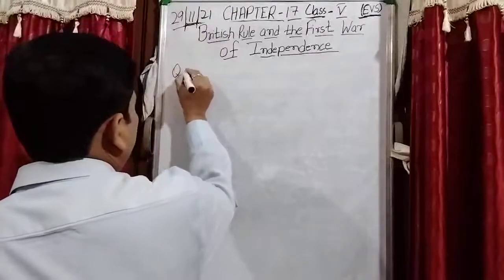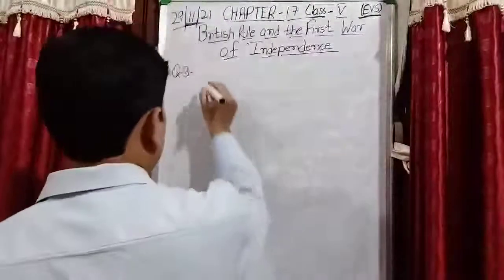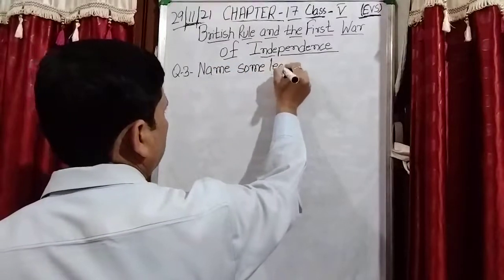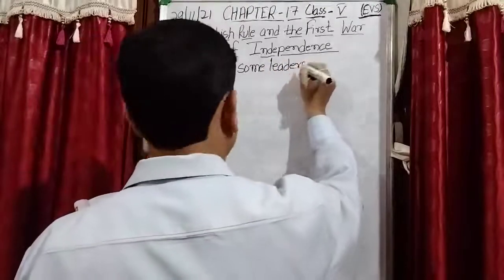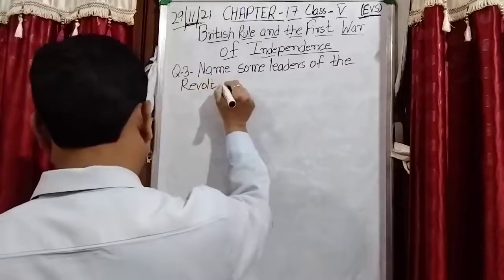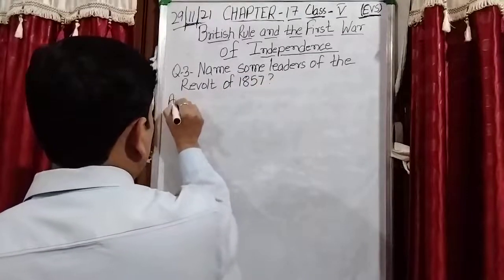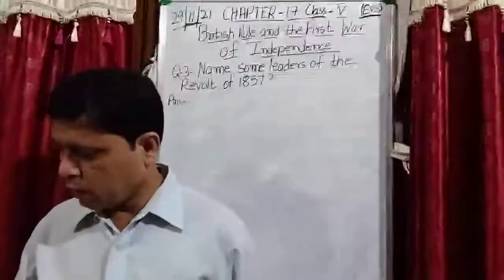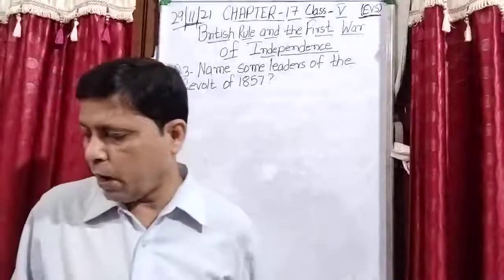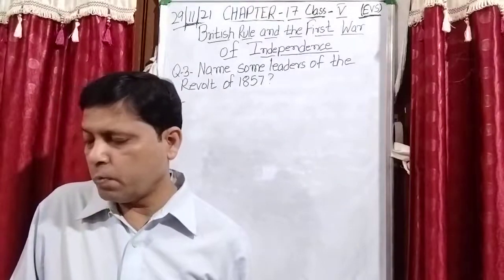Next, question number three: Name some leaders of the revolt of 1857. The leaders are: Nana Sahib and Tantia Tope from Kanpur; Liyaqat Ali and Kunwar Singh from Bihar; and two brave women — Rani Lakshmi Bai and Begum Hazrat Mahal of Awadh.